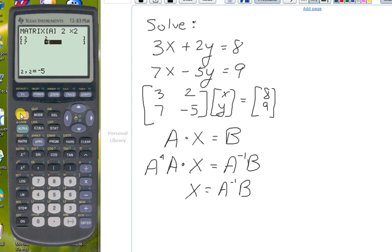And now we can quit the matrix, and now we have to get back in the matrix again to edit matrix B, which is matrix 2. We want that to be a 2 by 1 matrix, and our values are 8 and 9.